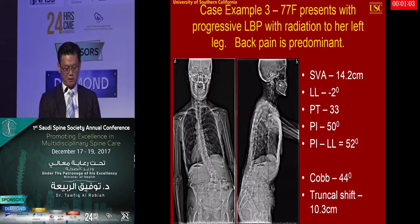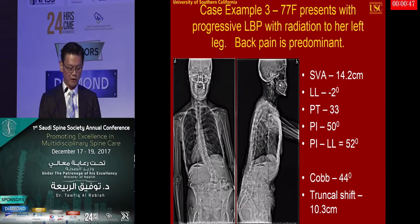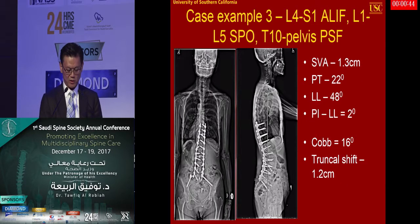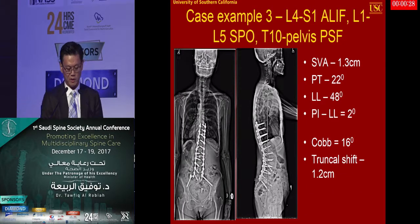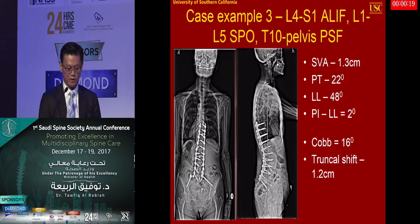Case 3 represents a Class 3 deformity with both sagittal and coronal imbalance — high-grade SVA, significant Cobb angle, and severely mismatched lumbar lordosis to pelvic incidence. This patient had initially undergone lumbar laminectomy as the smallest possible surgery but failed. Ultimately, she required an anterior-posterior approach with ALIF at L4-5 and L5-S1 followed by T10 to pelvis instrumented fusion with Smith-Petersen osteotomy.